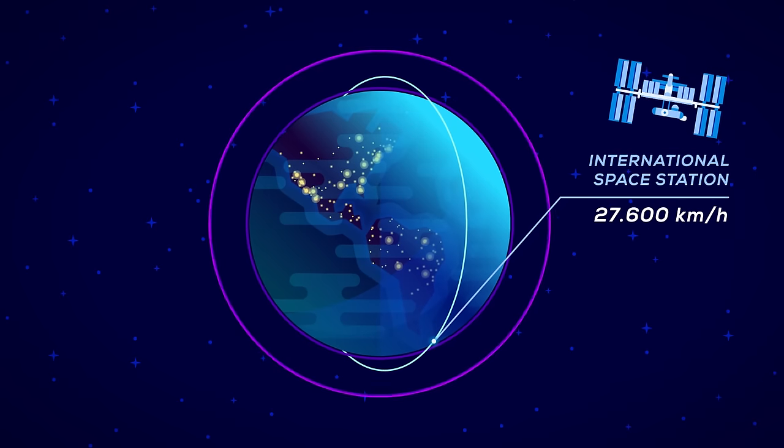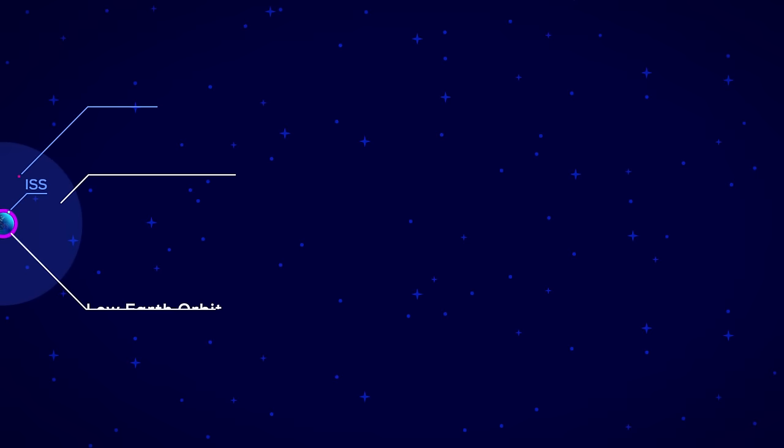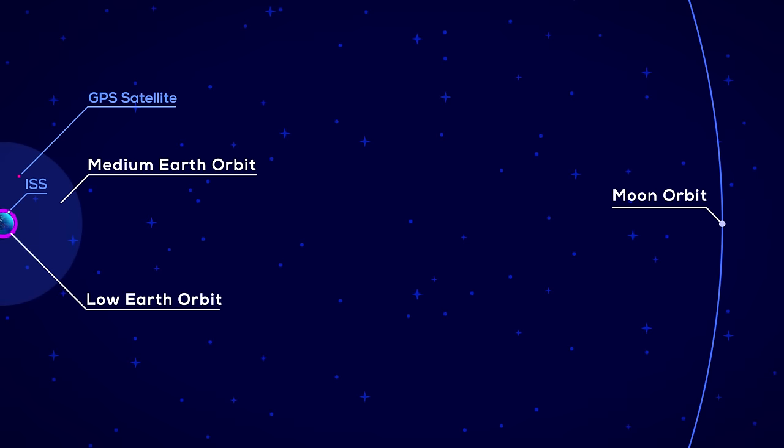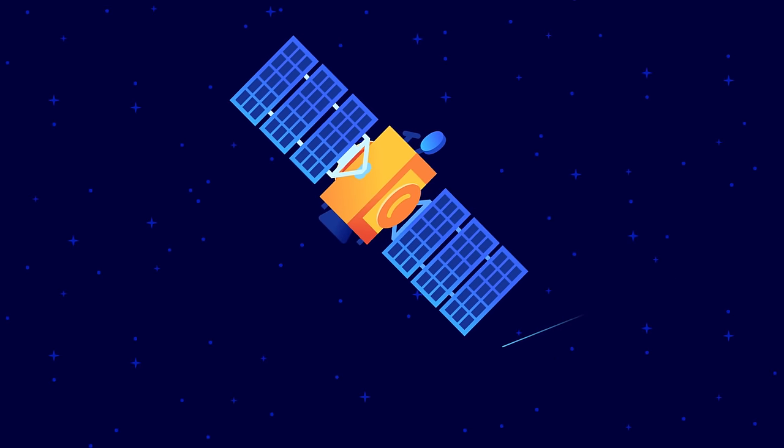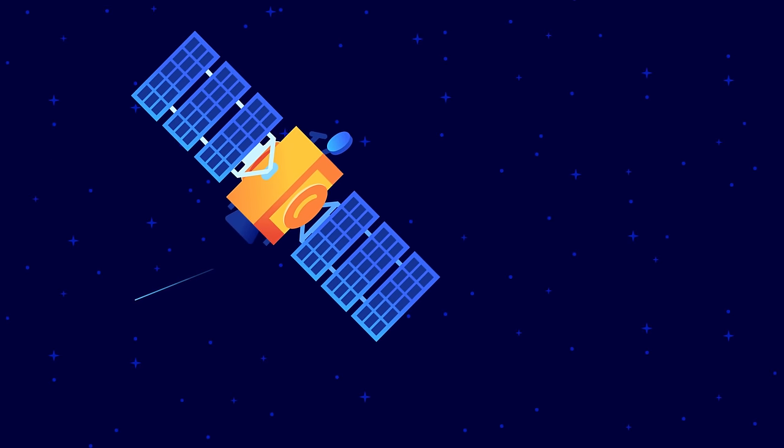If we look at orbits in scale, we see that near earth orbit is laughably close to earth. To deploy for example satellites or leave for other planets requires another round of energy debt repayment.